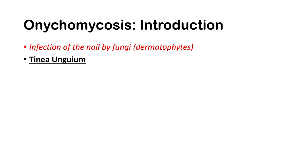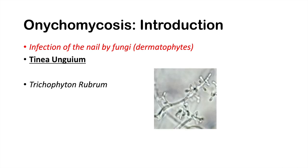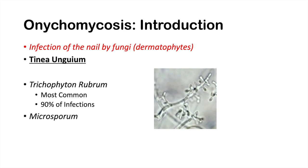Onychomycosis is also known as Tinea unguium, and the most common species of fungi that cause this infection is Trichophyton rubrum. Trichophyton rubrum is the most common cause, occurring in about 90% of infections. Other species that can cause onychomycosis include Microsporum and Epidermophyton.